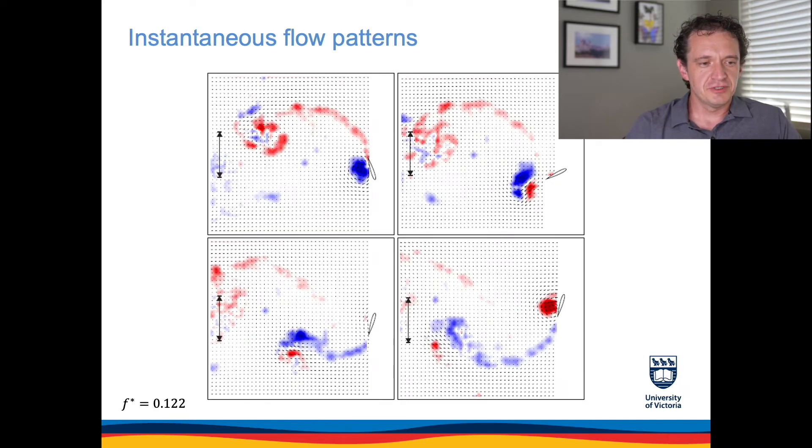This figure shows instantaneous vorticity contours in the region between the foils. So the upstream foil is indicated here and it sheds positive and negative vortices that are translated, conducted downstream and impinge or interact with the passive foil. The double arrow here indicates the window span by the heaving of the downstream foil. The foil itself is just outside of the shown area here.